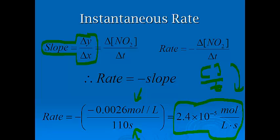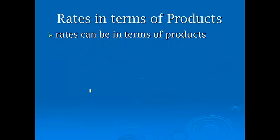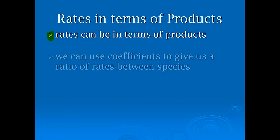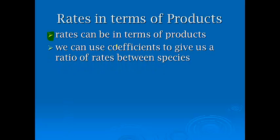They walk you through this on page 559 in your textbook. Rates in terms of products. To this point, we've only focused on the reactant. It also can be in terms of product. We use the coefficients to give us a ratio of rates between species. That's kind of what I was getting at when I said that we made half as much oxygen.